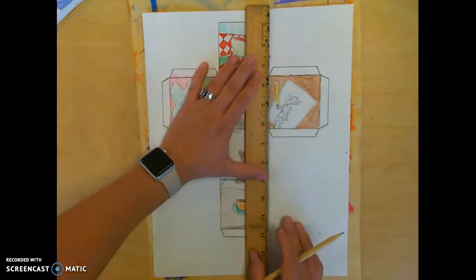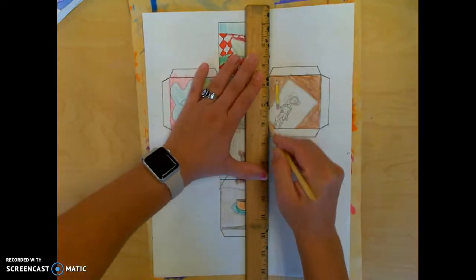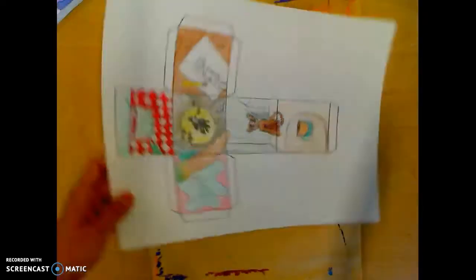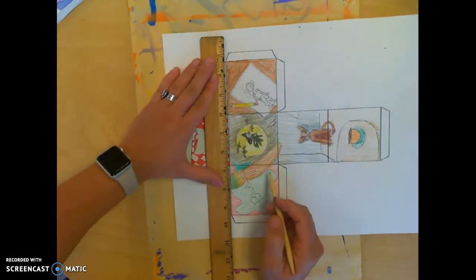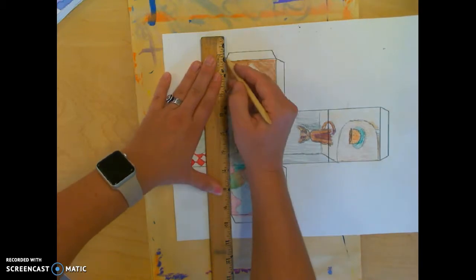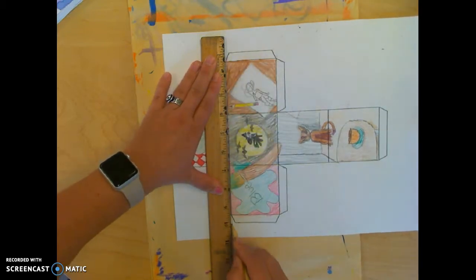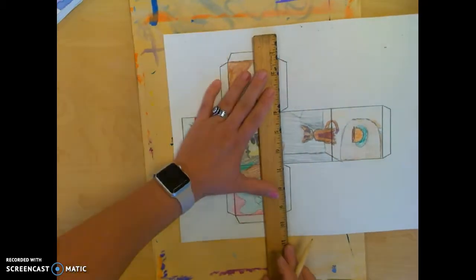You're going to do this for every single line that separates the sections of your cube, even the ones for the tabs. So I'm going to put this horizontally, and I'm pressing pretty hard here, too. Doing the same thing down here.